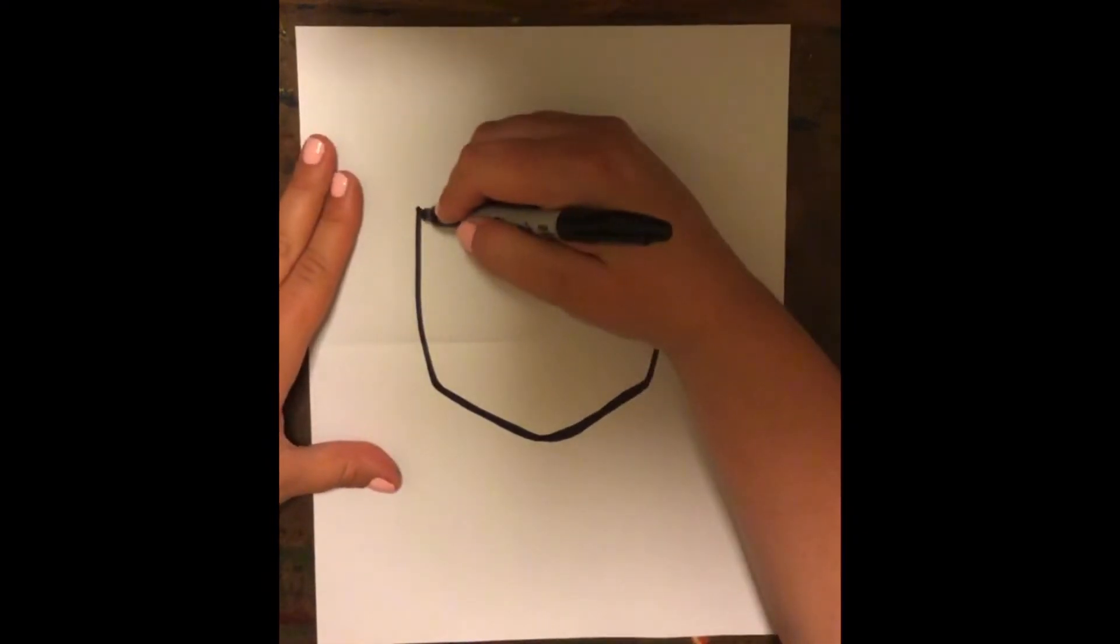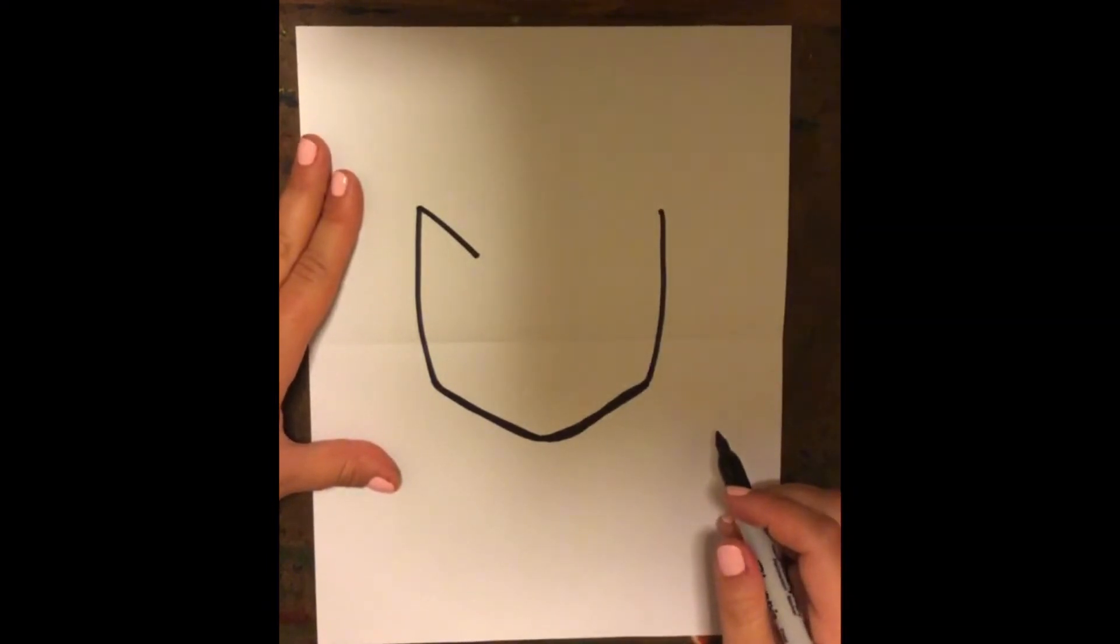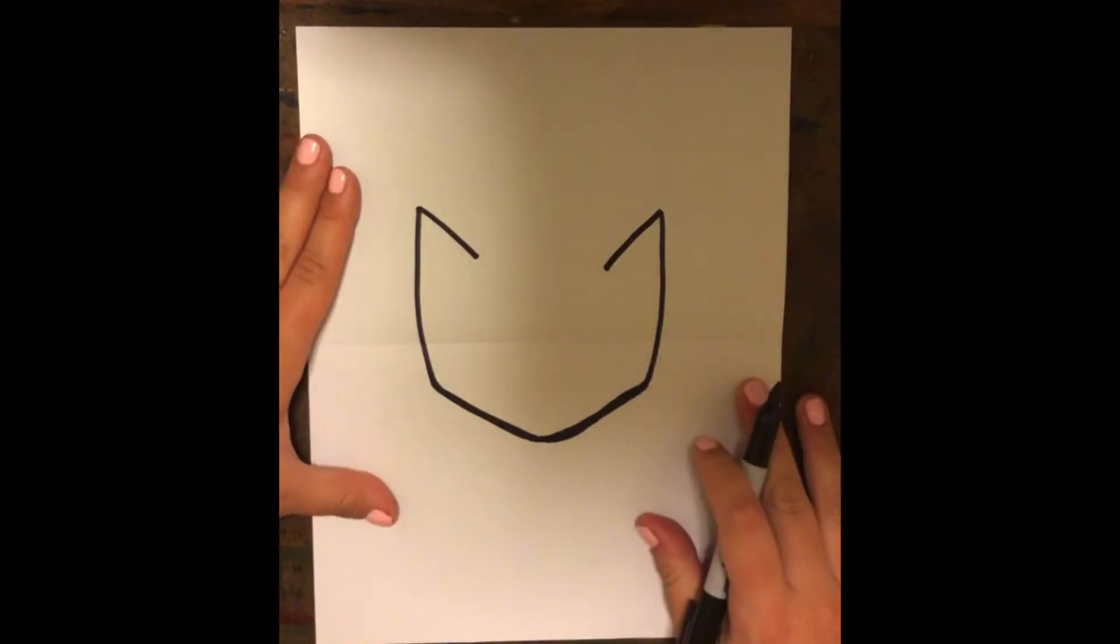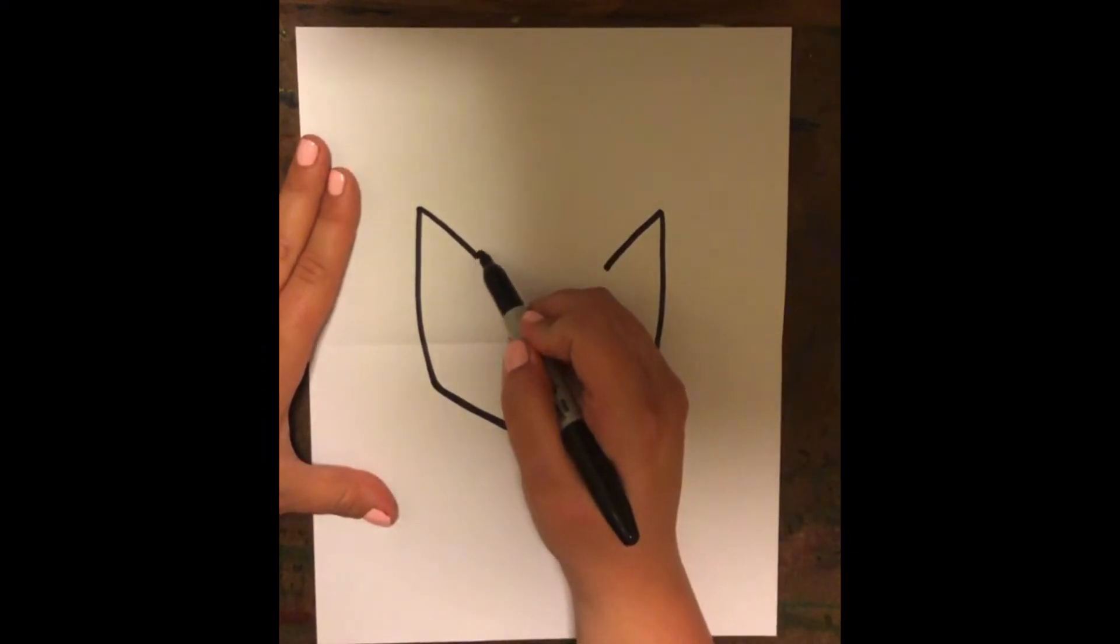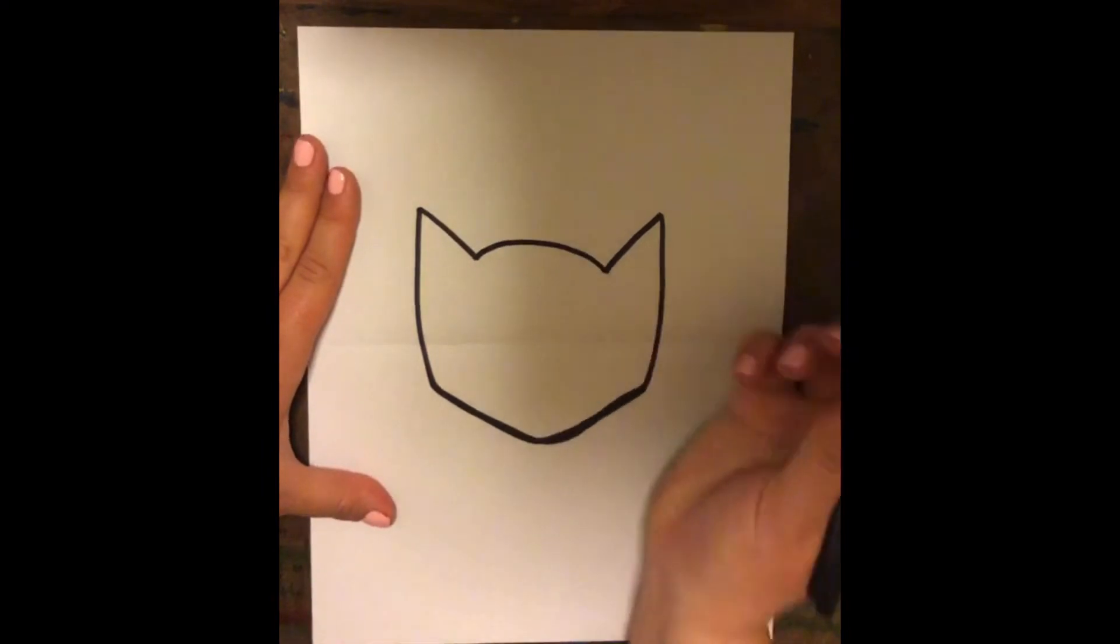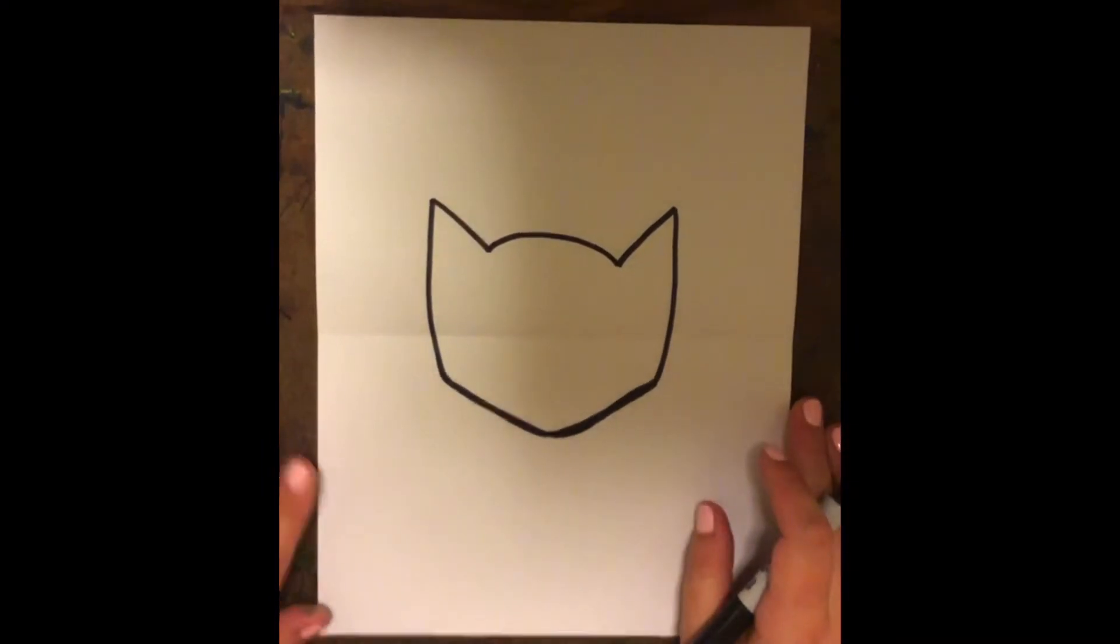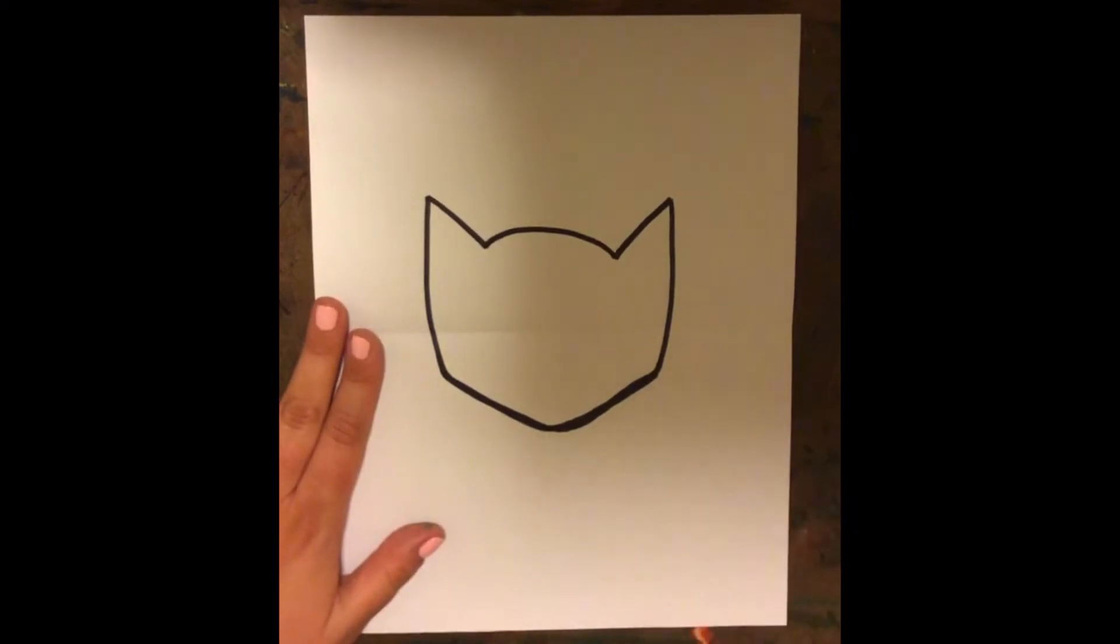All right, now we're going to do the triangle ears with a diagonal line going down from the top, down in towards the face, and then we're going to do the exact same thing on the other side. And then we're going to want to connect those, the top of his head, with an arch or a curve, just like that. And if you need to pause, if I'm going too fast, feel free to do that.